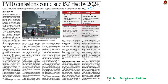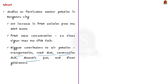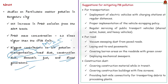Now let us take up this article, which mentions about particulate pollution in Bangalore city based on two studies. The studies found there will be a 15% increase in PM10 emission from 2019 levels, and the current PM10 mass concentration is around 1.3 times higher than the limit permissible by the Central Pollution Control Board. The biggest contributors to air pollution in Bangalore identified were transportation, road dust, construction dust, domestic fuel, and diesel generators. The transportation sector contributes the most PM2.5 pollution, while soil dust contributes more to PM10 pollution.